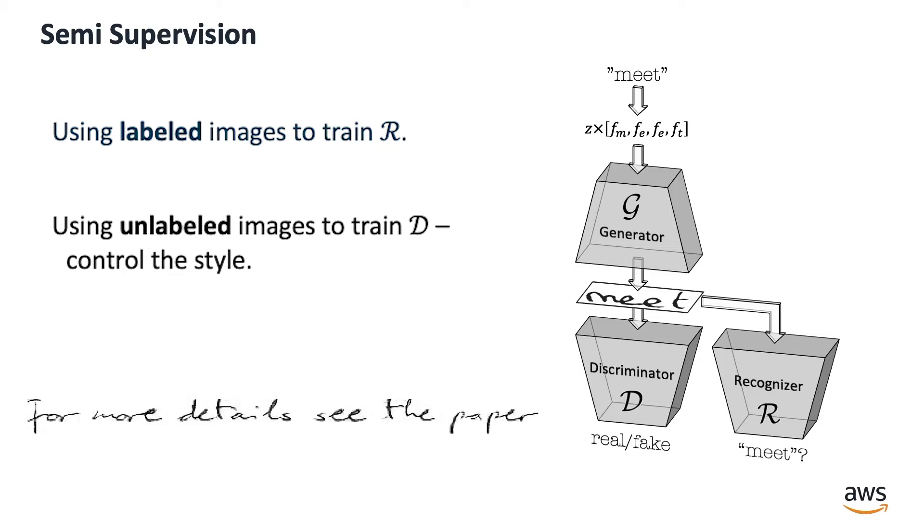Our architecture can be trained in a semi-supervised manner while using labeled data to train the recognizer and unlabeled data to train the discriminator.